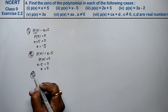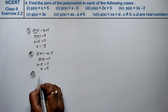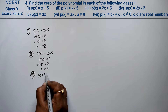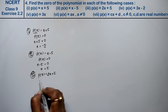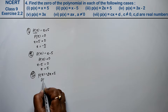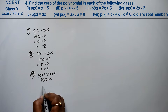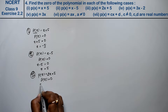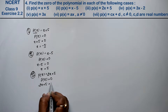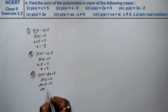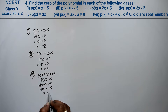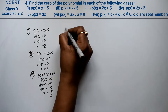Let's do third part. p(x) equals to 2x plus 5. तो p(x) को हमने equal to 0 रखा, तो 2x plus 5 equals to 0. 2x अपनी जगह, plus 5 उधर गया तो minus 5 हो गया. तो x की value कितनी आगई? Minus 5 upon 2 is the answer.